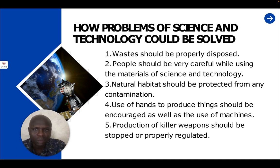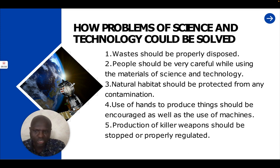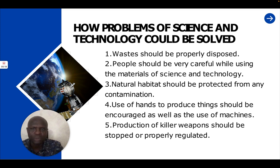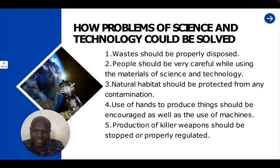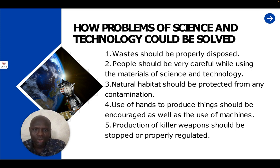Now, we want to see how the problems of science and technology could be solved. Number one, waste should be properly disposed. If we really appreciate the effort of science and technology, we should try to maintain it by using the products of science and technology very well. When we are trying to dispose our waste, we should dispose it properly — we should not just dispose it anywhere. We should get a dustbin and designated areas where we can drop our waste. People should also be very careful while using the materials of science and technology.